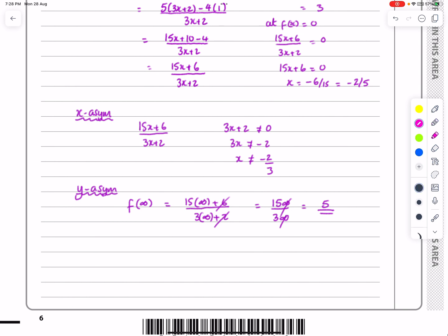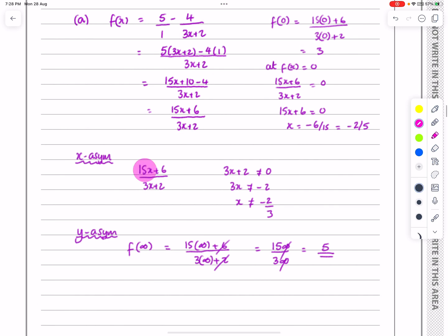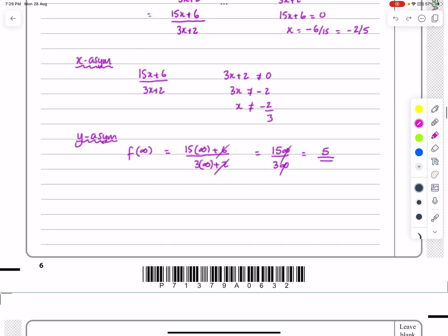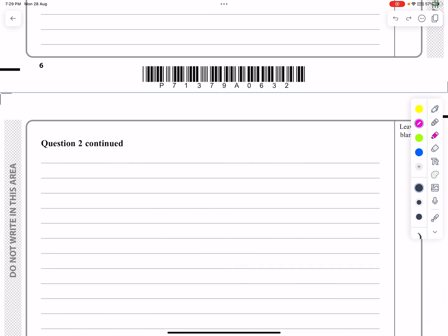When you get used to that technique, we could have done that straight away pretty much by looking at that function and saying, if I'm sticking infinity in, I'm going to get 15 infinity over 3, 15 over 3, I'm going to get 5. So although it's taken me quite a long time to explain, it's a really nice quick way of doing that. So we've now got all that information, too much really.